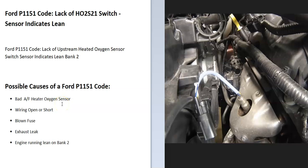Today I'm talking about a Ford with the P1151 code, what it is and how you go about fixing it. The Ford P1151 code is lack of HO2S21 switch sensor indicates lean. Some scan tools will also give you lack of upstream heated oxygen sensor switch sensor indicates lean bank 2.